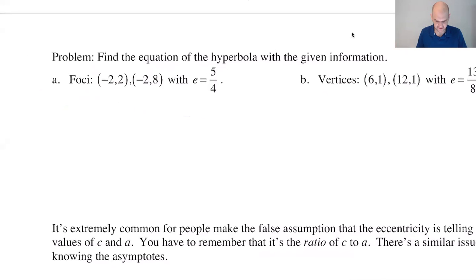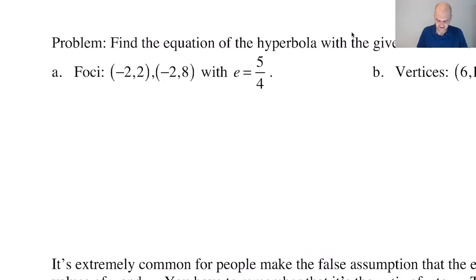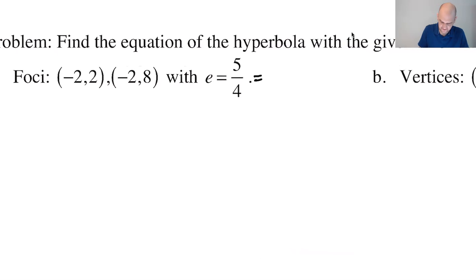So how are we going to do this? Well, we know that eccentricity is definitely C over A, but that doesn't mean that C is equal to 5 and A is equal to 4. That means the ratio of C to A is 5 to 4. And that's a thing that we need to worry about.